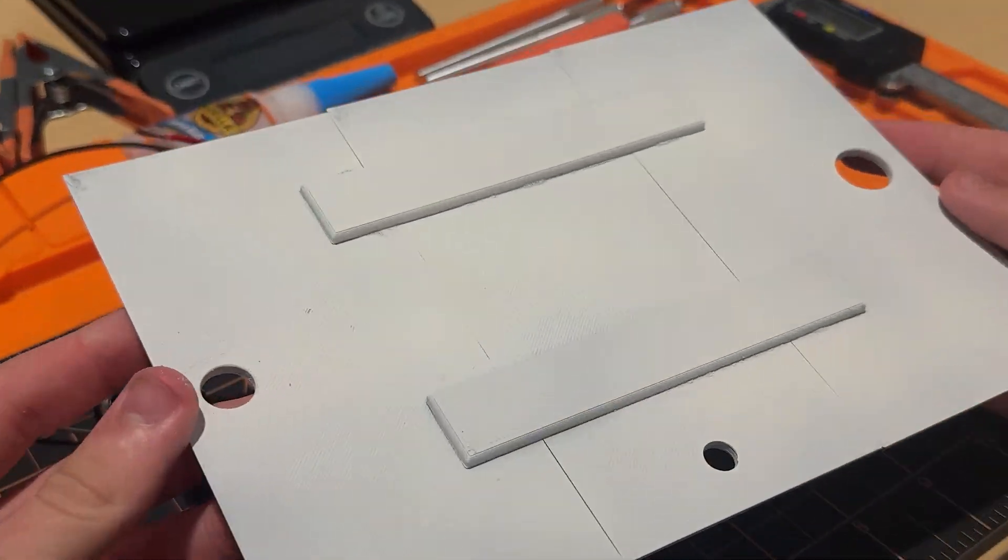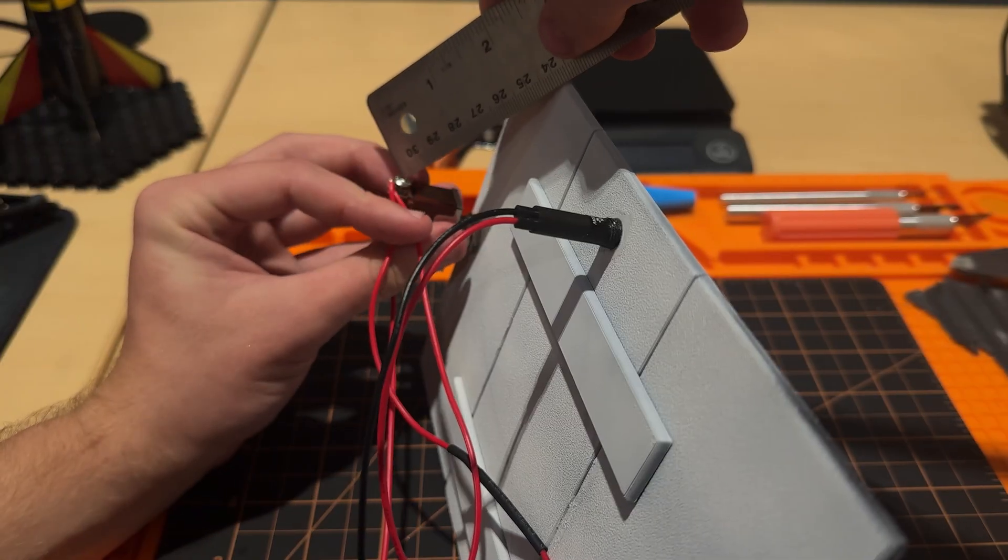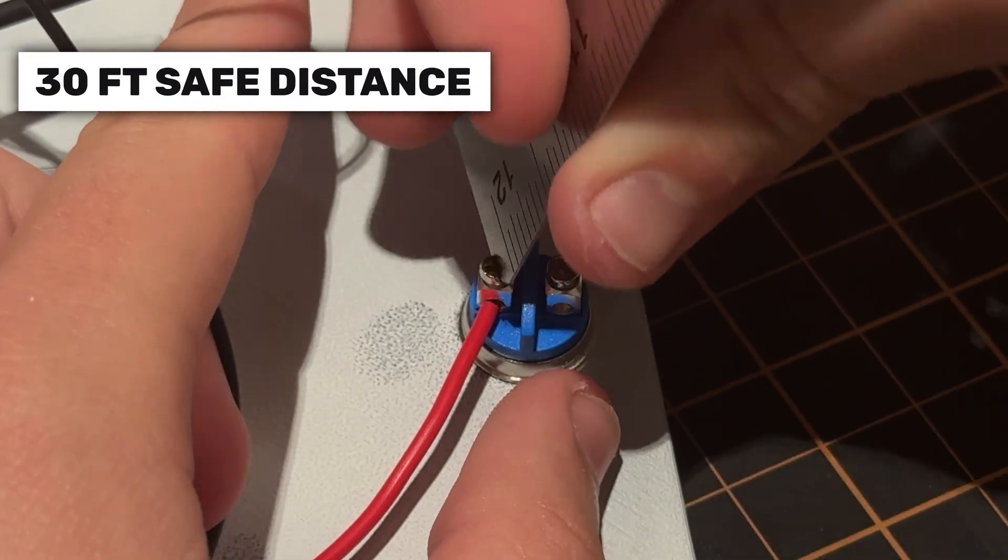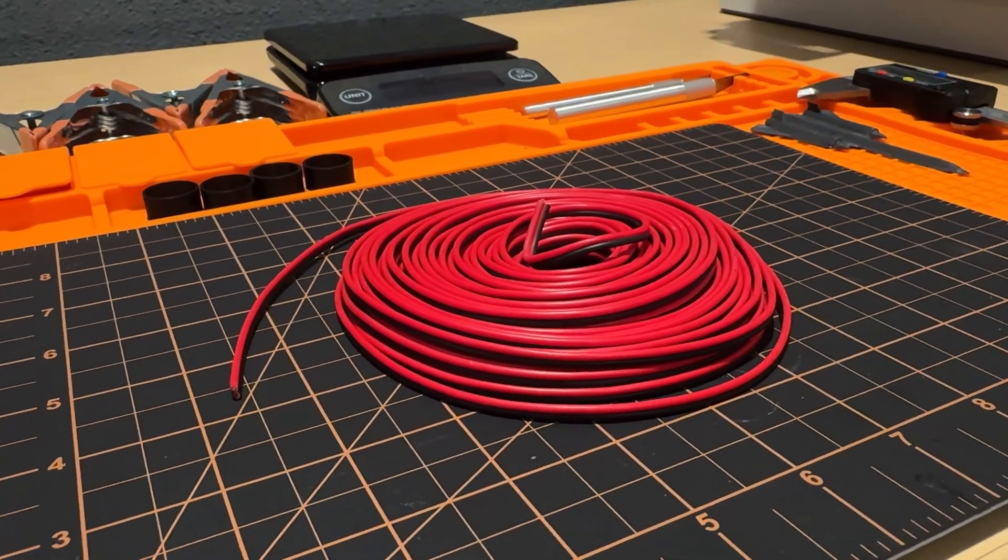Now before we go any further, let's talk about safety for a second. Model rocketry has a set of safety guidelines, and one of the big ones is distance. If you're using bigger motors, you can't just stand a couple feet away from the pad. For medium class motors, the National Association of Rocketry recommends at least 30 feet of distance from you and the pad. And that's why I went with 30 feet of wire.